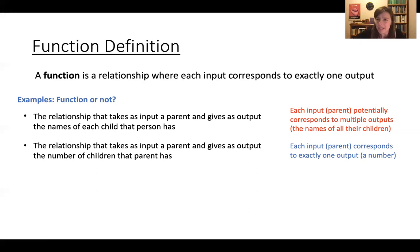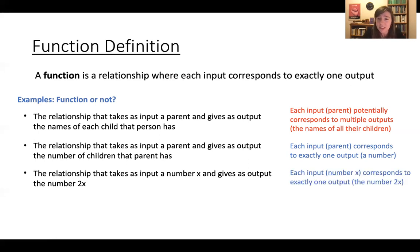Okay, so let's look at some mathier examples. How about the relationship that takes as input a number x and gives as output the number two times x. This is a function because each input, if you give some number x, it corresponds to exactly one number, the number 2x. Multiplying by two gives you a unique number out.